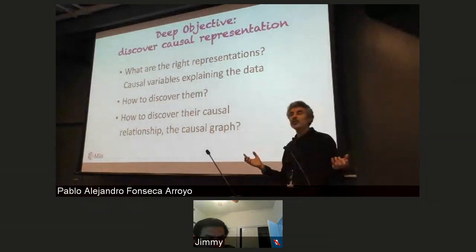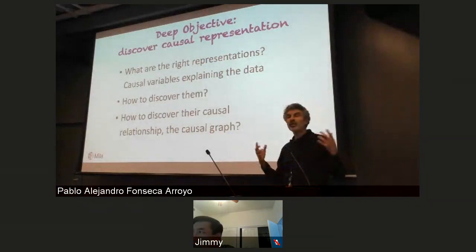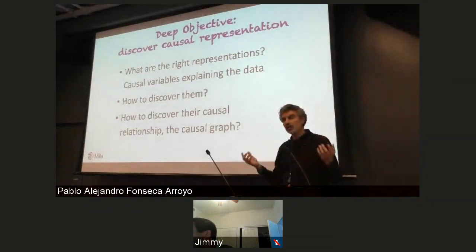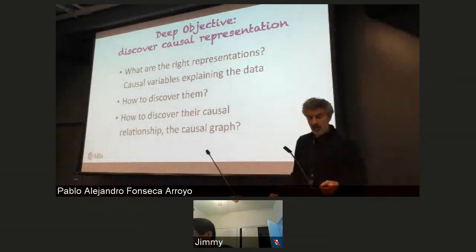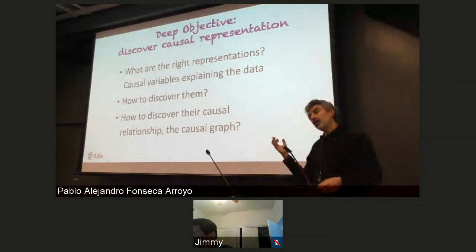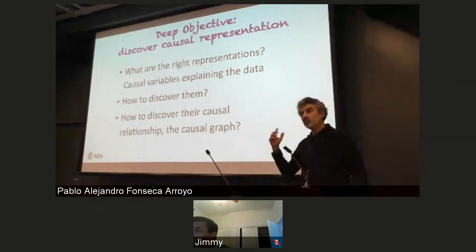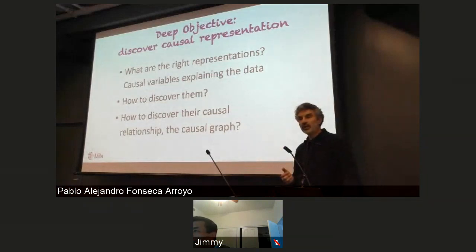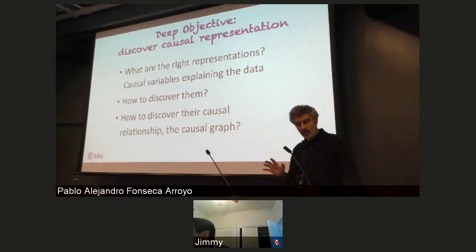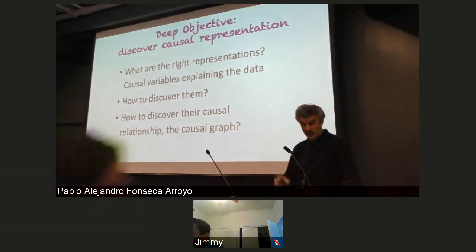How they relate to each other we kind of already know is standard machine learning - you learn traditional distributions and joint distributions. But which is cause and which is effect is a question that hasn't received that much attention yet in machine learning, and especially in deep learning.